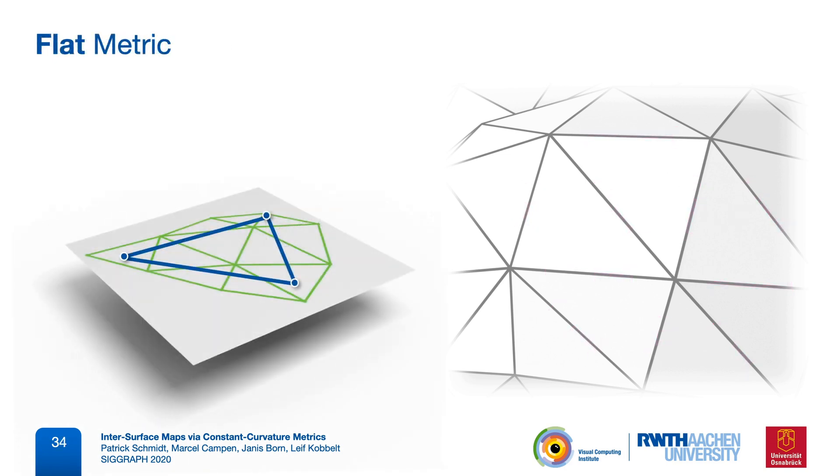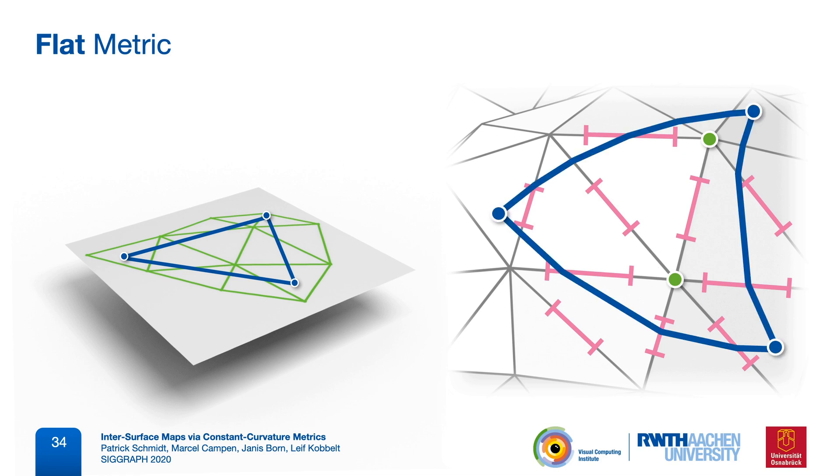Earlier I mentioned the benefits of mapping to the plane. Geodesics in the plane are just straight lines. So we could map our target surface to the plane and compute geodesics there. And this really is the same as equipping the surface with a flat metric. We assign edge lengths such that the discrete curvature at each vertex becomes zero. We then know that geodesics in this metric will be unique, because they are just straight line segments in the plane. And in retrospect, this is what many methods that map via the plane exploit implicitly.